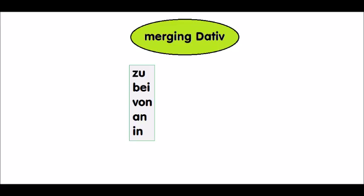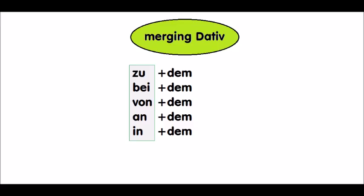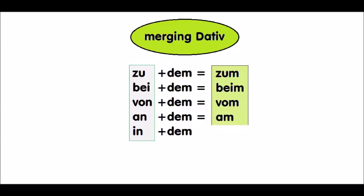Some prepositions merge with the dative article 'dem'. Remember these five prepositions: zu, bei, von, an, in. When they meet the article 'dem', they merge into: zum, beim, vom, am, im. You might see them unmerged sometimes — the reason is that 'dem' also has the meaning 'that'. So if you want to say 'I'm at the café', you say 'ich bin beim Café'. But if you want to say 'I'm at that café', you say 'ich bin bei dem Café'. Don't worry about it too much — just merge these prepositions when you use them.